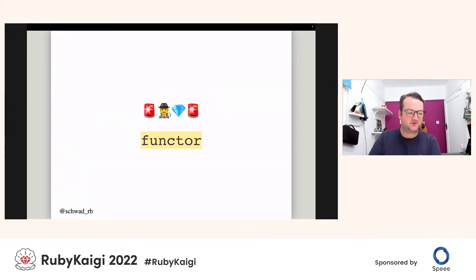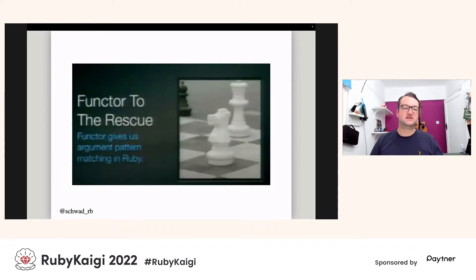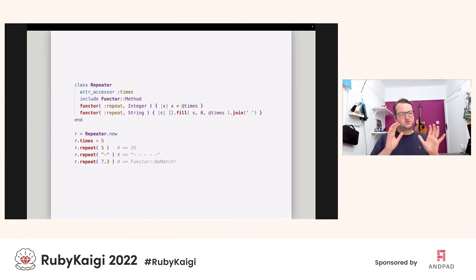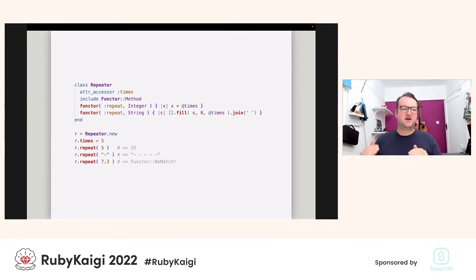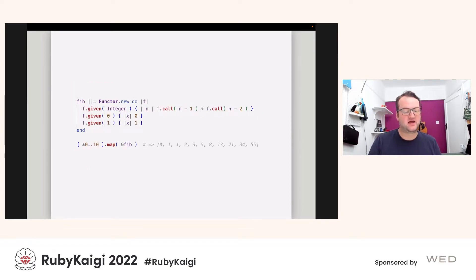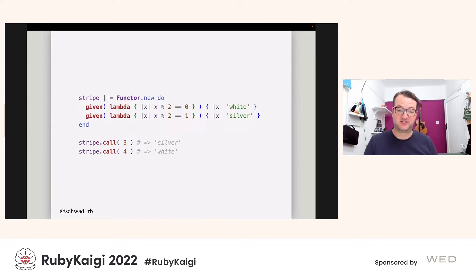Functor gave argument pattern matching in Ruby — written under the Waves organization as its own dependency. In vanilla Functor, you have a class with an outer accessor, you include the Functor mixin, and define functors. When you call a method, it hits a different implementation based on the pattern — in this case, the argument type. So if repeater.new.repeat is called with an integer versus a string, it hits different methods. This is what Functor lets you do with pattern matching in 2008. It can implement Fibonacci via pattern matching, and you can even define your own matchers with a lambda. Functor has a slight performance cost but alleviates it with configurable caching.